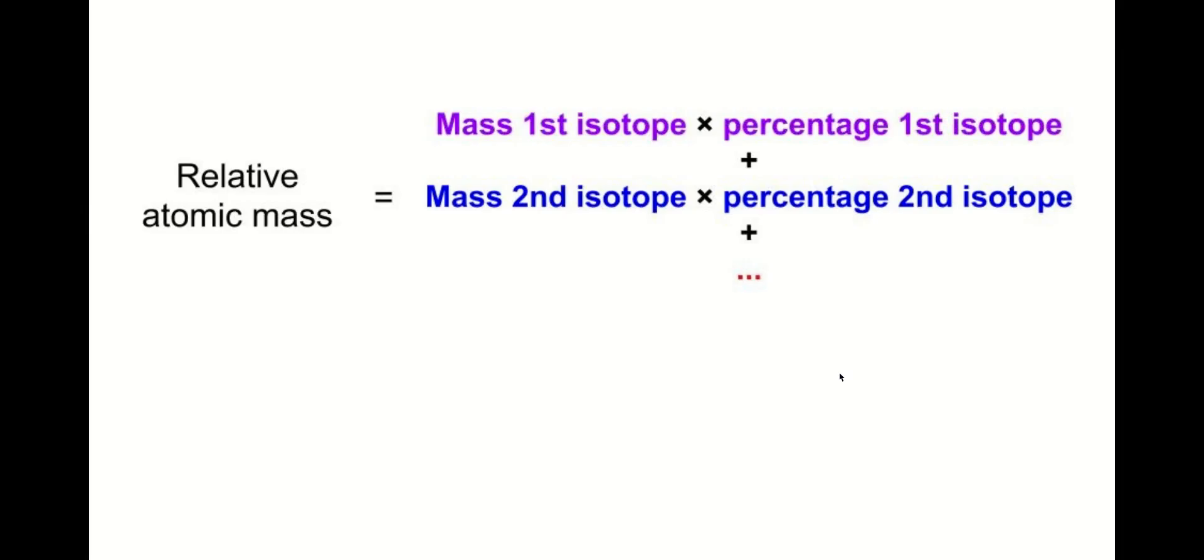Here's the formula that we use when solving for the relative atomic mass. So you take the mass of the first isotope and you multiply it by the percentage of that first isotope. Then you will add that to the mass of the second isotope and multiply that by the percentage of the next isotope. And if you had more than two isotopes you would continue to take the mass times the percentage until you had included all of the isotopes for that element.